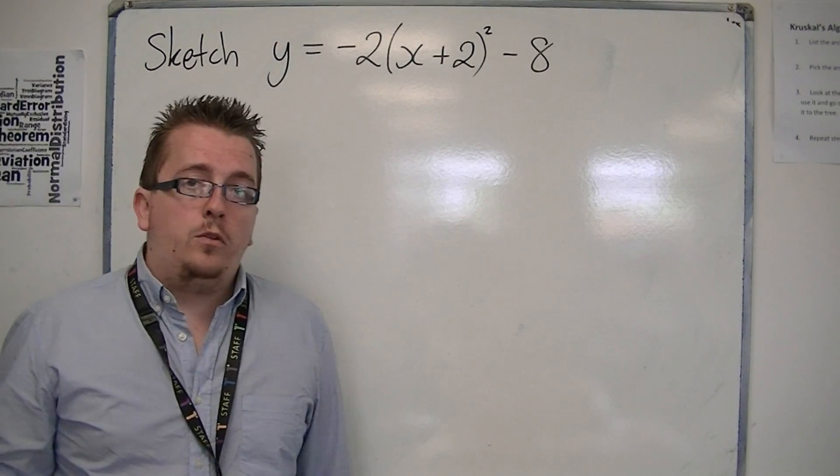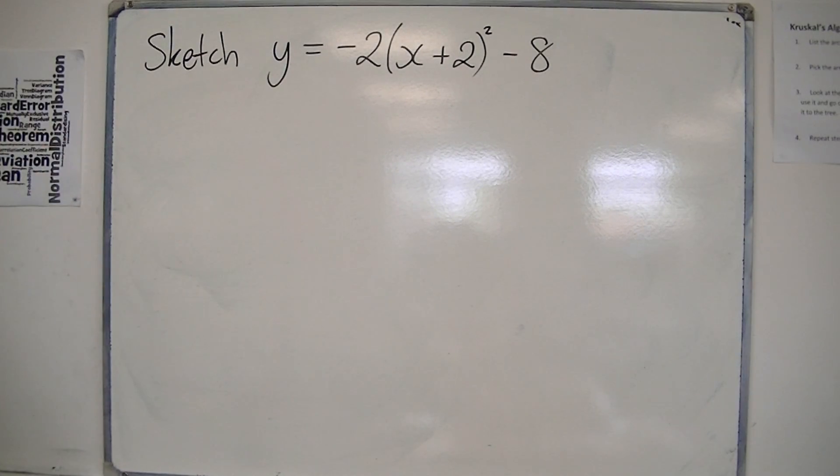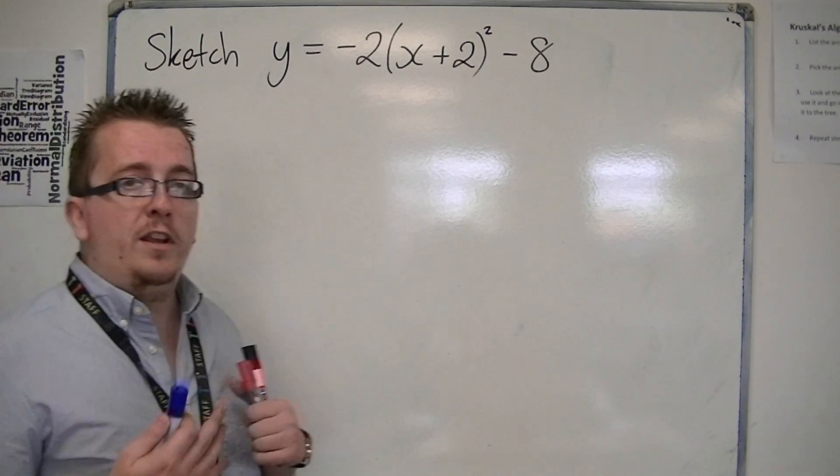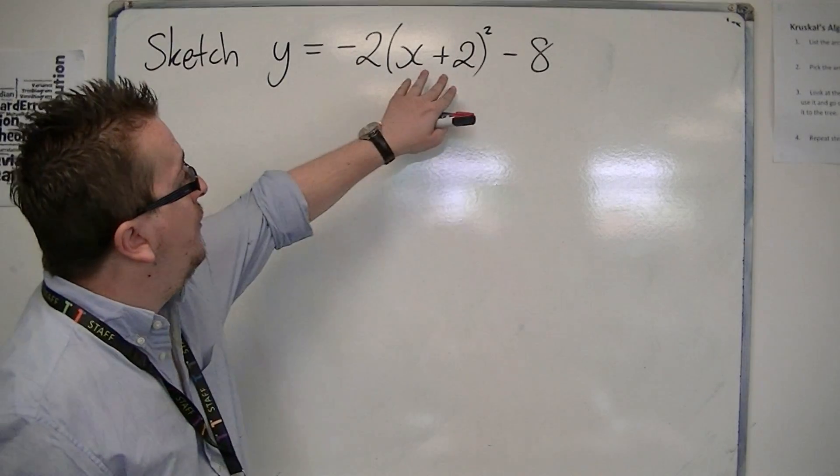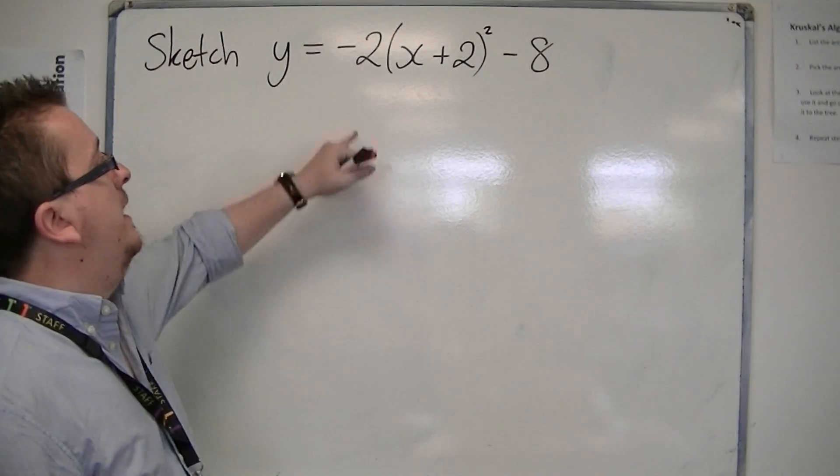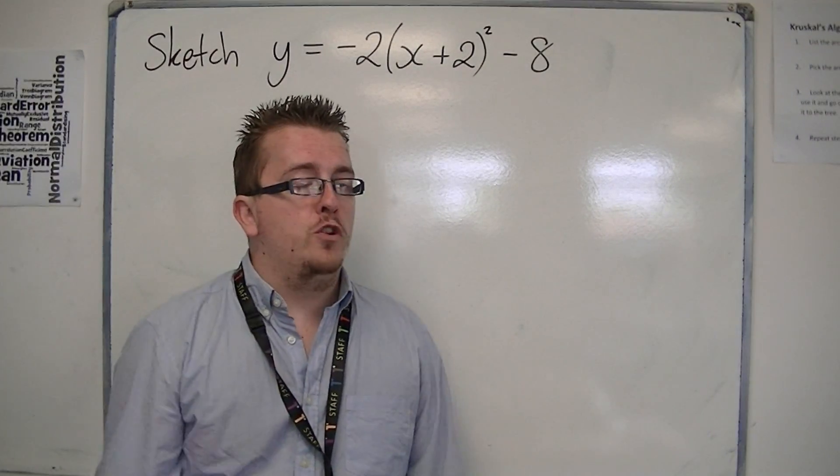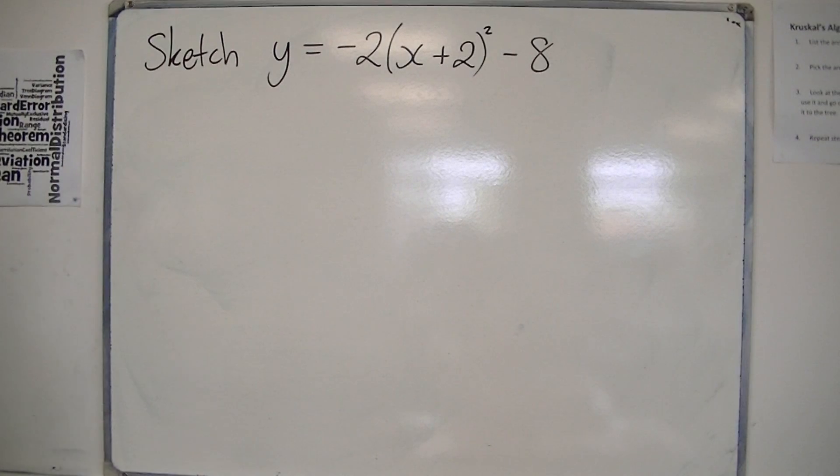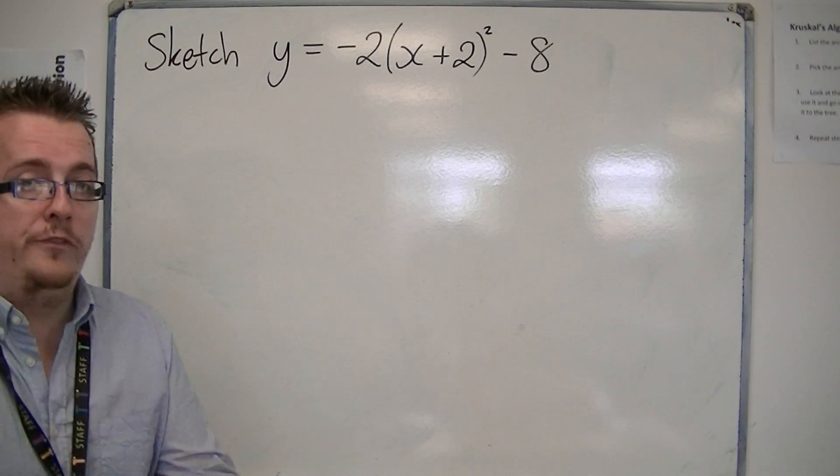By now, you should probably be picking out the fact that we're just going to be looking at what's the number inside the bracket and the number that is outside the bracket, and currently pretty much ignoring that minus 2 in terms of finding the vertex.